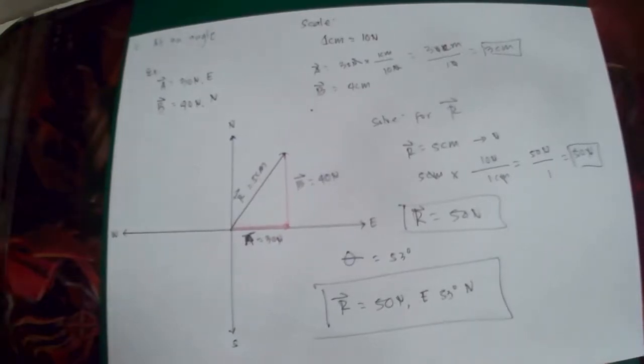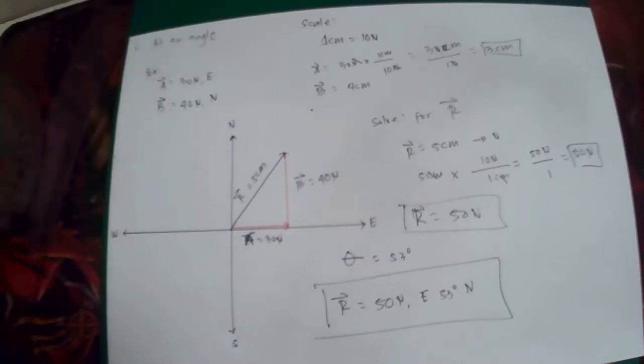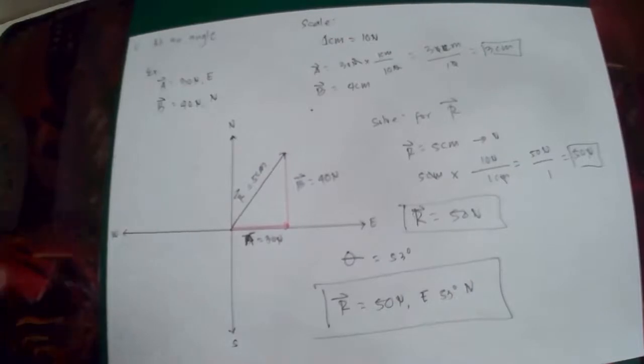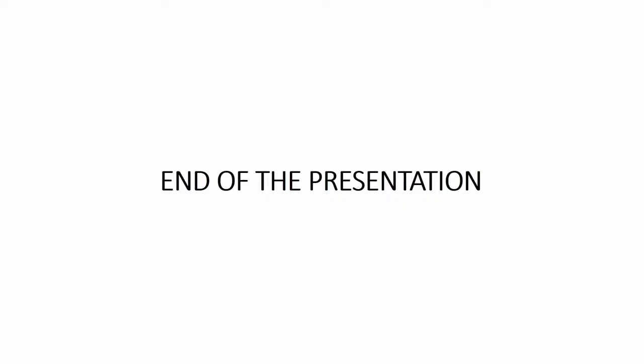So that is how we solve or find the value for resultant vector when the vectors are at an angle or perpendicular to each other. You can pause this video and copy this solution. That would be all. Thank you so much. If you have some clarifications regarding the concepts, theories, and principles that have been presented in this video, let me know in our group chat so that I could answer or clarify your queries. Thanks for watching and see you in the next video.